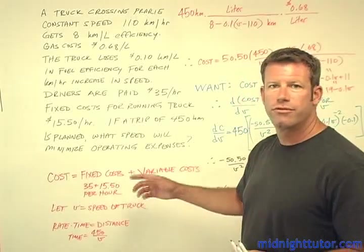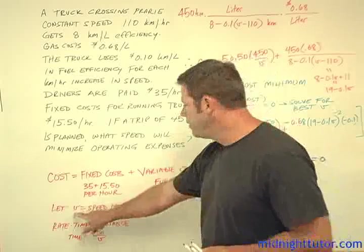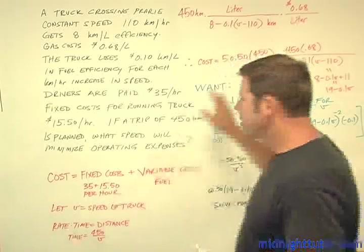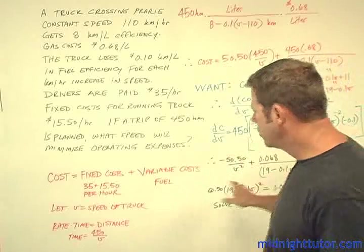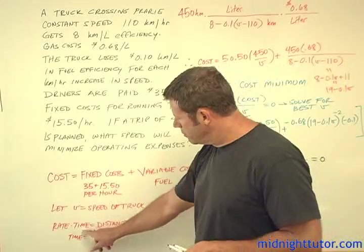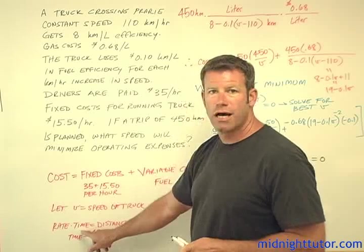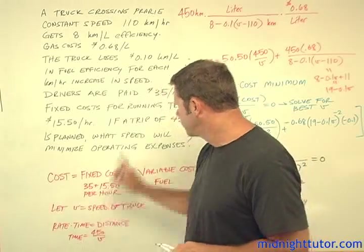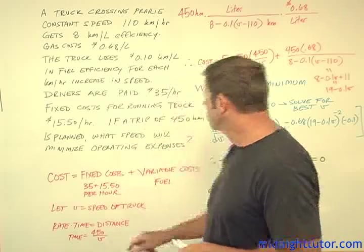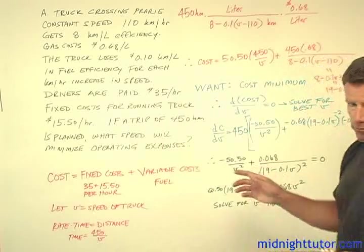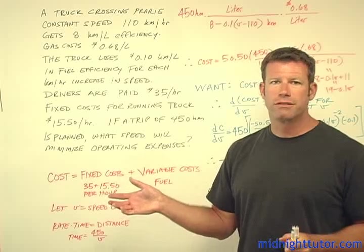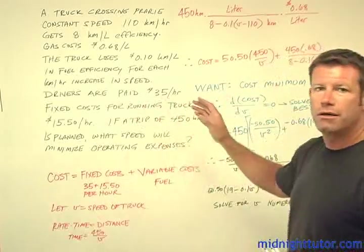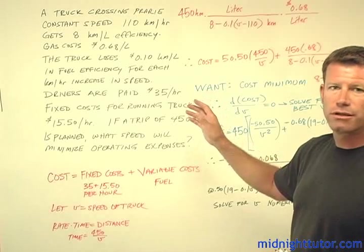Then we have another cost due to fuel, which relates to fuel efficiency. Let V equal the speed of the truck, and we're going to calculate out a cost. In order to do that, we need to note that rate times time equals distance, so the time is going to be 450 divided by V. I didn't really know where to begin with this problem because there's a lot going on and it's not obvious where to start, so I just started playing around with some dimensional analysis.